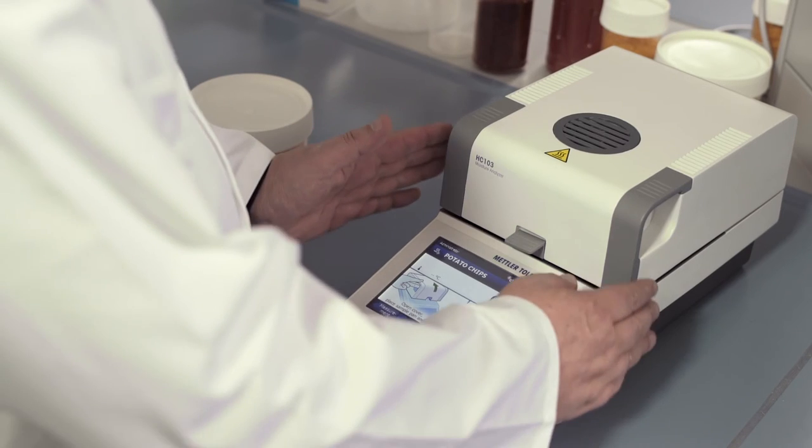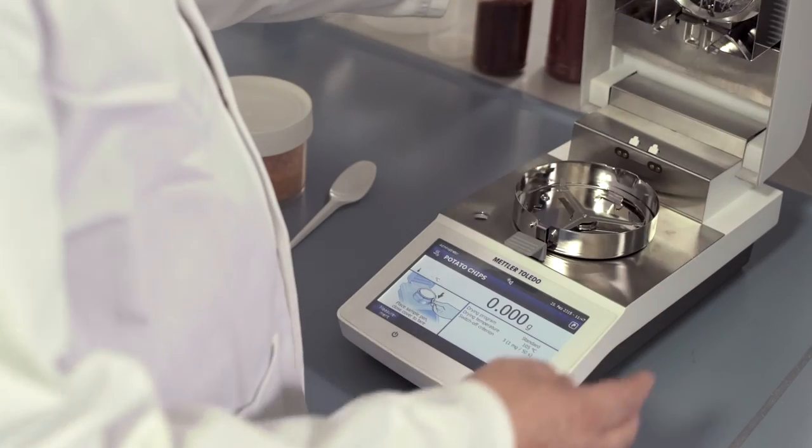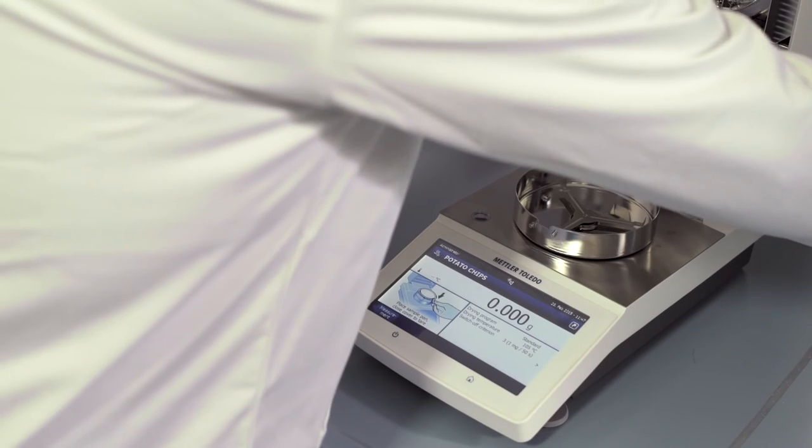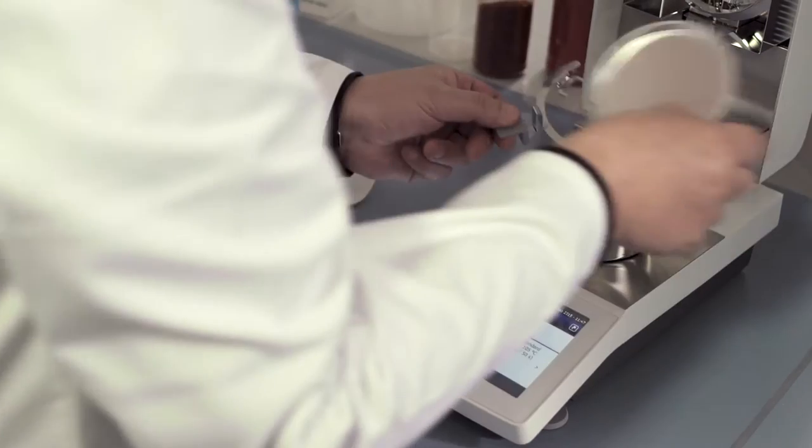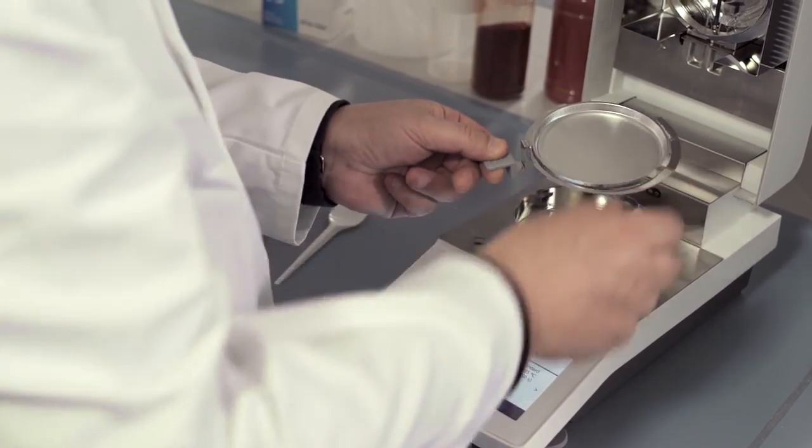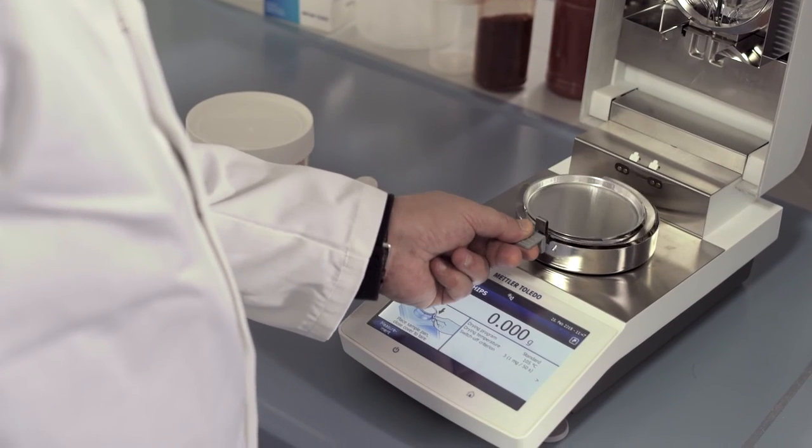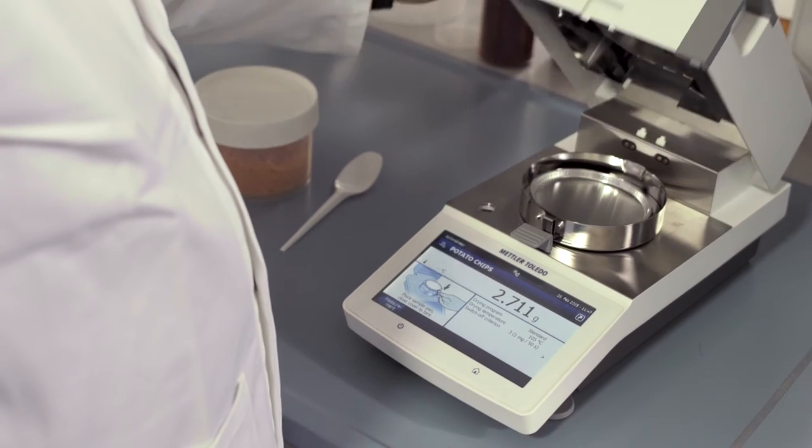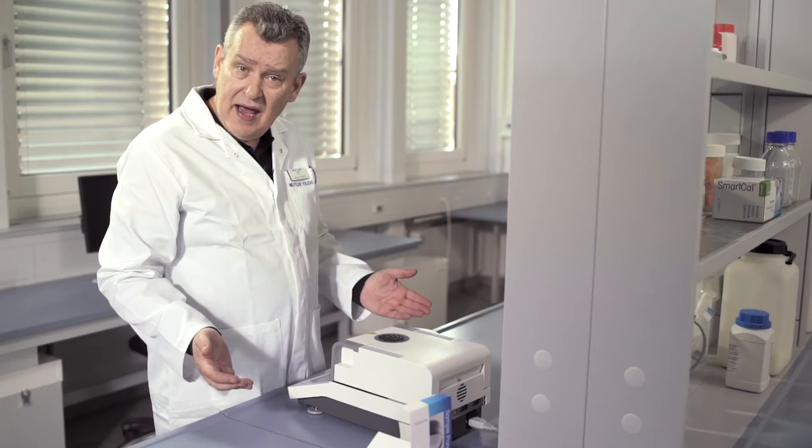Place the aluminium sample pan in the pan handler. Place the pan handler on the weighing pan and close the lid to automatically tare.